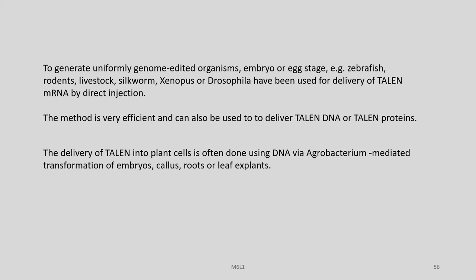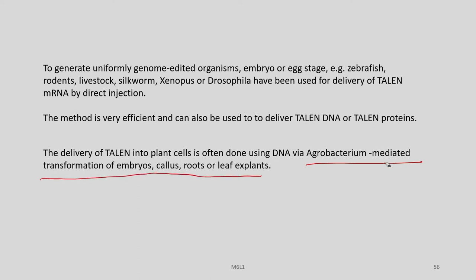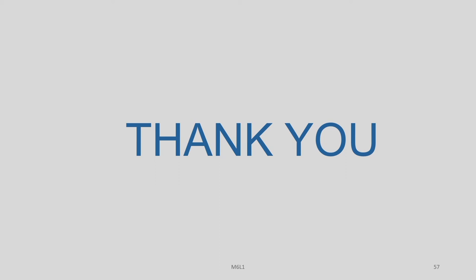If delivery is related to a plant system, we can use these natural pathways for delivering the TALEN constructs. To generate uniformly genome-edited organisms, embryo or egg stage is preferred — for example in zebrafish, rodents, livestock, silkworm, and Drosophila, direct injection has been used for delivery of TALENs. The delivery of TALENs into plant cells is often done using conventional Agrobacterium-mediated transformation of embryos, calli, roots, or leaf explants where the TALEN is sent as a DNA construct. With this we come to the end of this lecture, which discussed the basics of TALs and how fusing TALs to nucleases and other proteins can be used to carry out various genetic modifications.